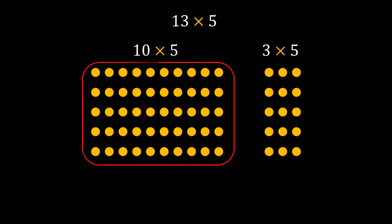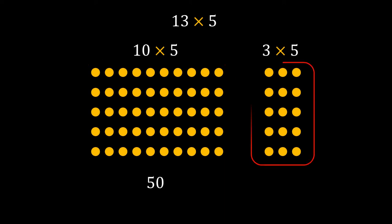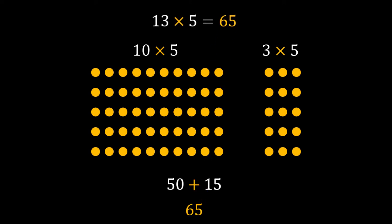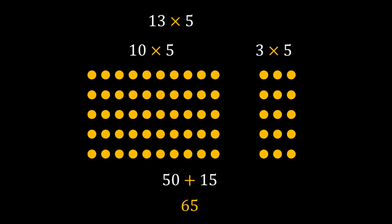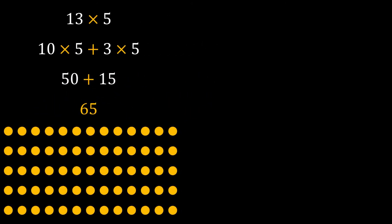10 times 5 simply equals 50, and 3 times 5 is 15. Adding 50 and 15 gives us 65. That means 13 times 5 equals 65. So we can make the multiplication simpler by using the expanded form of the numbers.